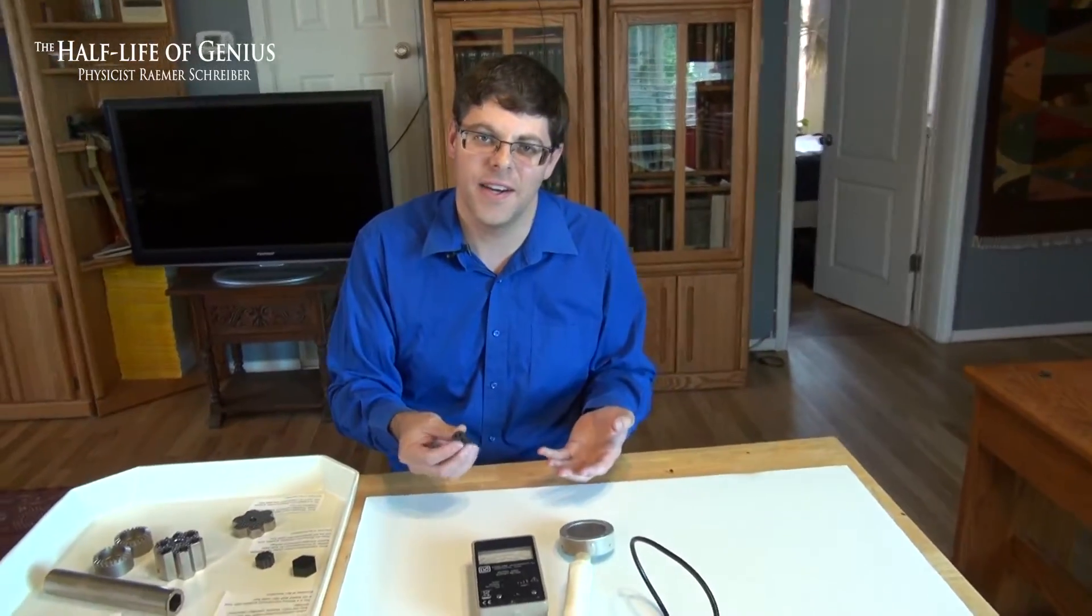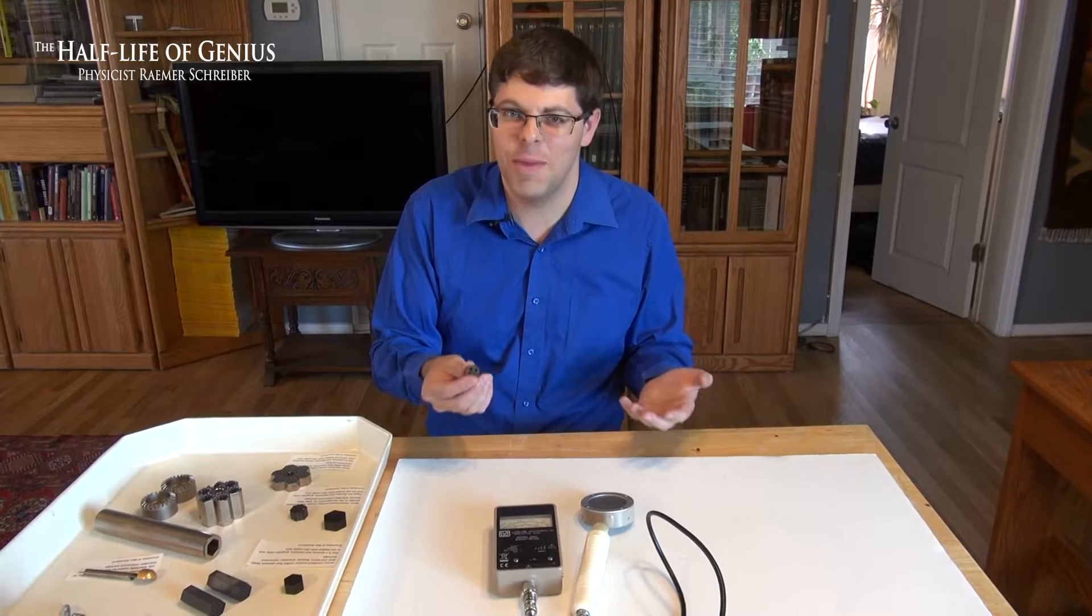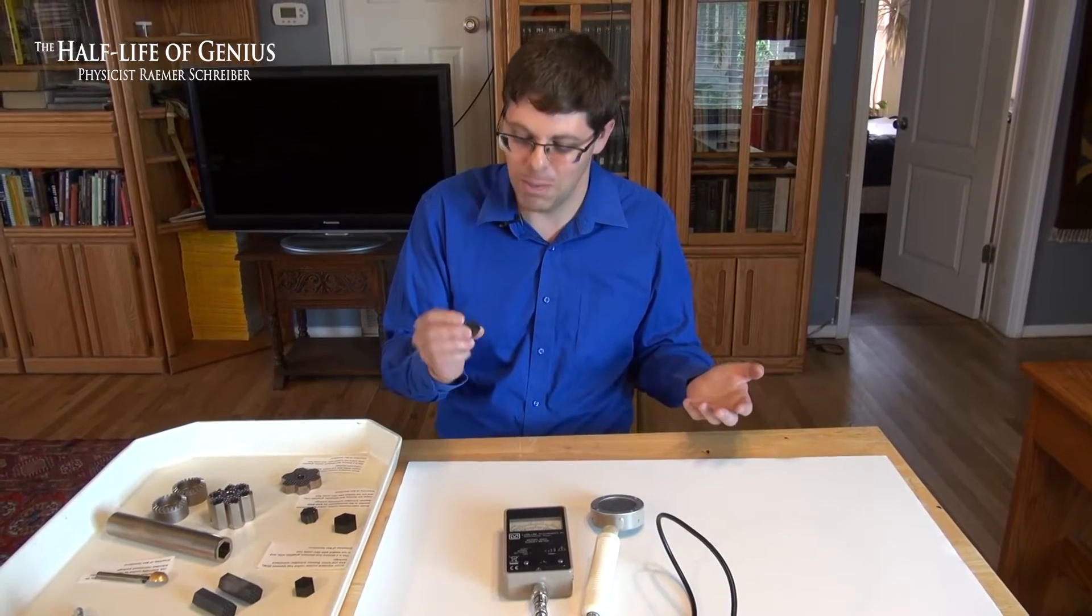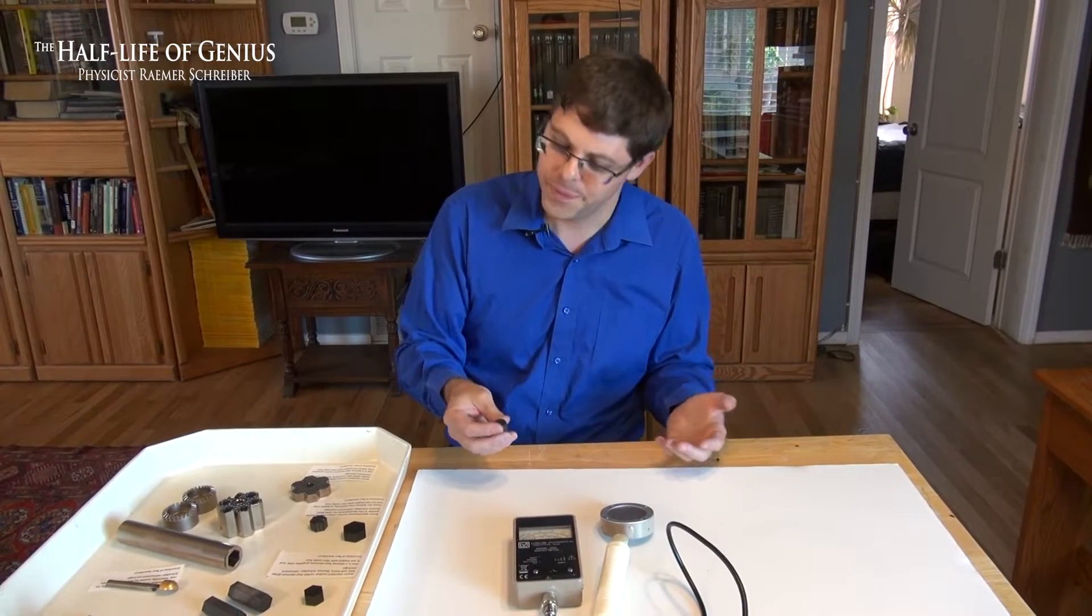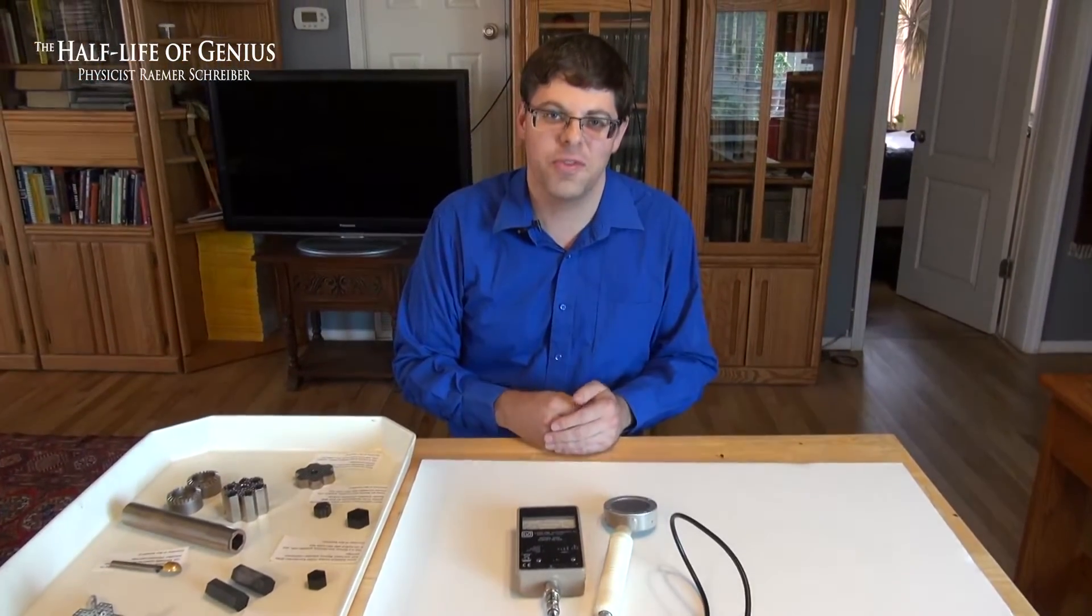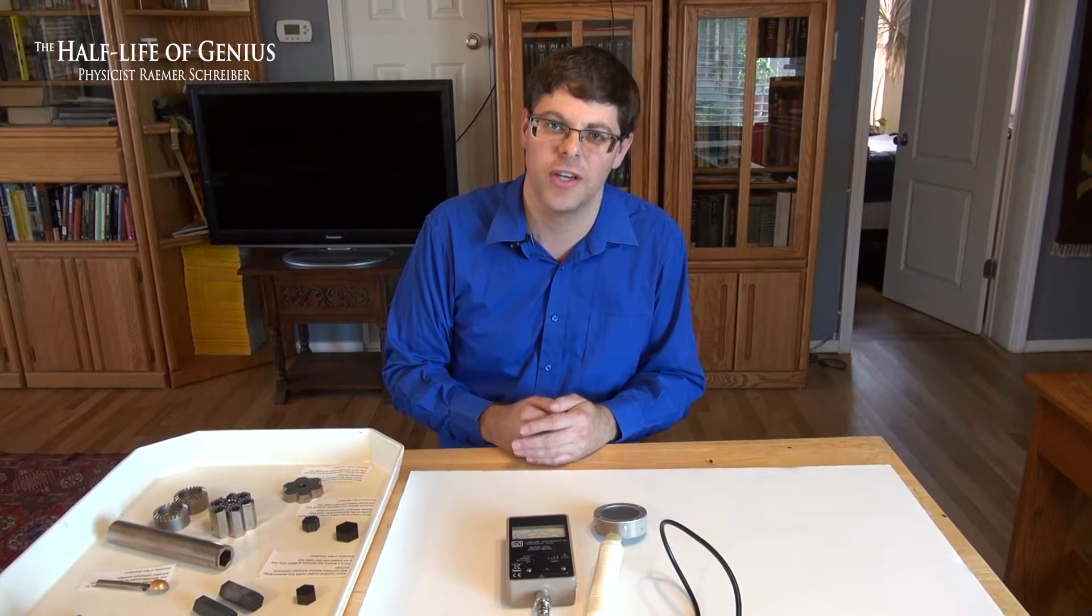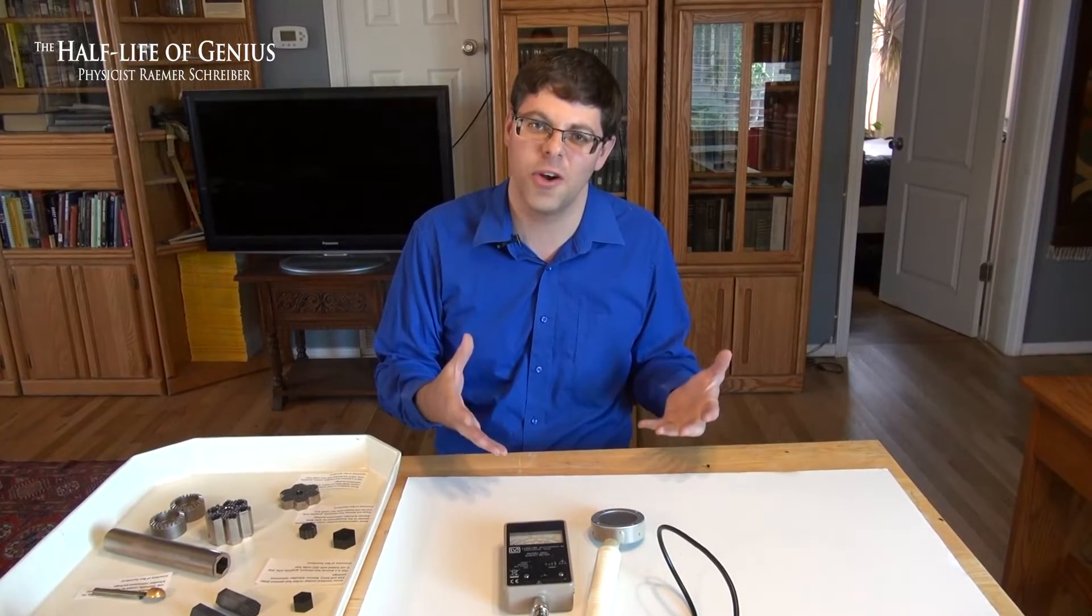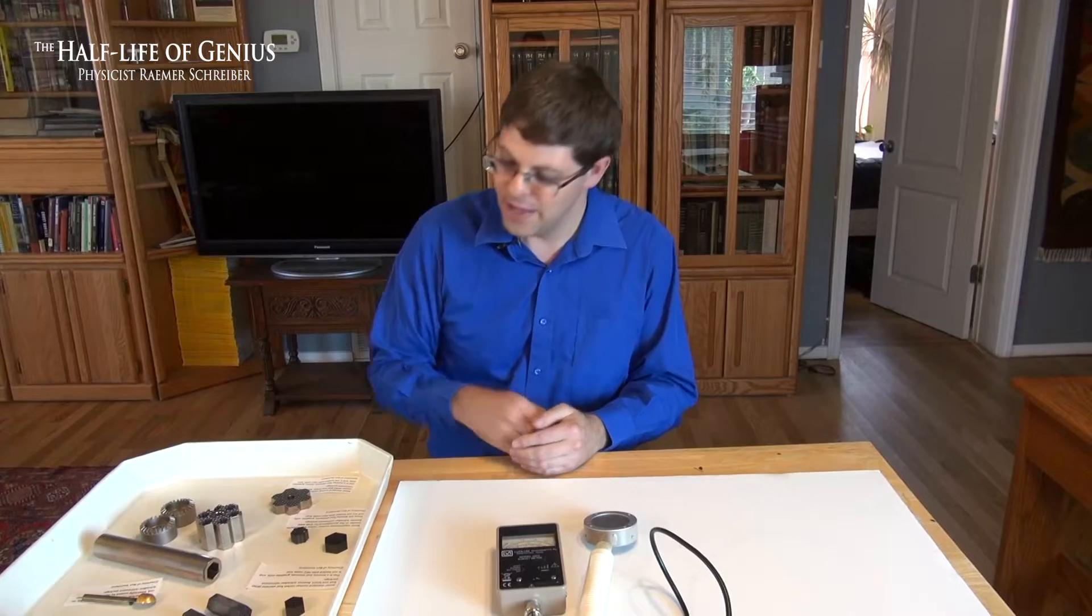So we're getting about twice background in alpha and beta counts off of this little piece of mock-up fuel. Now, obviously, if this were the real fuel, you would have highly enriched uranium carbide in there, and it would be very radioactive. This is not that, but it's still radioactive. So it makes sense to ask, well, why is this little mock-up piece of fuel actually detectably radioactive and what can we learn from it?